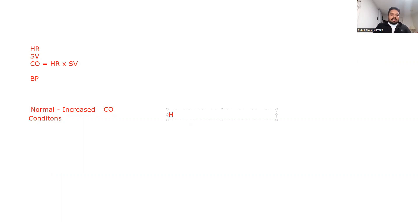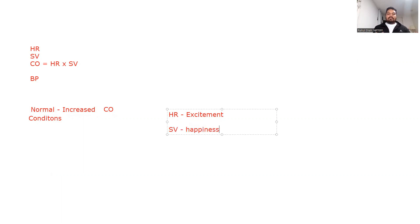I'm going to explain these in a story format. I want you to relate heart rate and blood pressure to your excitement in a situation — when you're excited, your heart rate is higher. Stroke volume represents happiness — how happy your heart is, how you're feeling inside. So I'll use stroke volume as happiness and heart rate as excitement as we go through each condition.